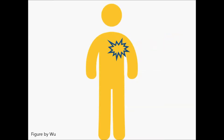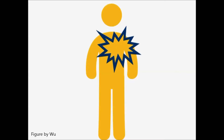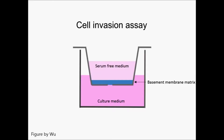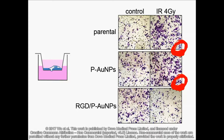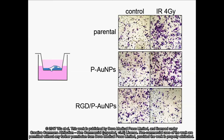Invasiveness is a special characteristic of cancer cells that differs from normal cells, and is also a factor related to the degree of malignancy. To measure the invasive activity of cancer cells, we used a Matrigel invasion assay. After planting equal amounts of cells into the chamber, we could see that the invasive activity of cancer cells increased after a single dose of radiation. However, the invasive activity was significantly inhibited in the presence of RGD-conjugated gold nanoparticles.